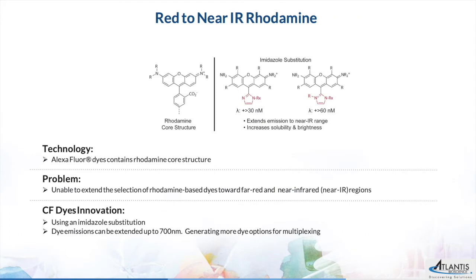Next, for Rhodamine dyes — they are known for their excellent photostability and fluorescent quantum yield. Consequently, several of the Alexa Fluor dyes bear the Rhodamine core structure. However, challenging chemistry has hindered efforts to extend the selection of Rhodamine-based dyes towards far-red and near infrared regions. Significant breakthroughs by chemists have now unlocked the potential of Rhodamine dyes through imidazoline substitution of the benzene ring, so that dye emission can be extended up to 700 nm.